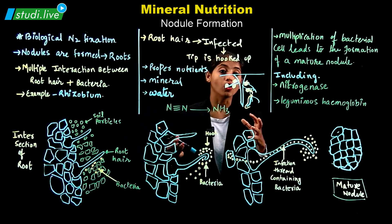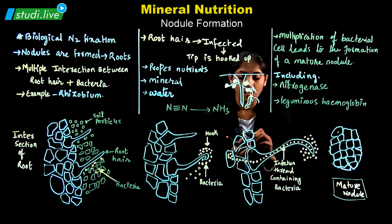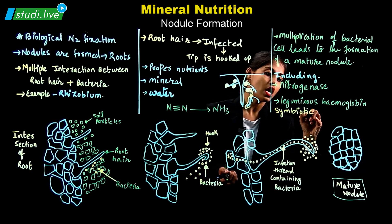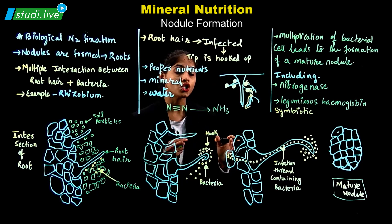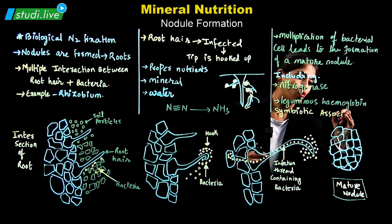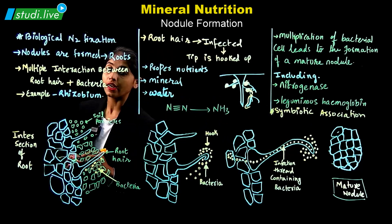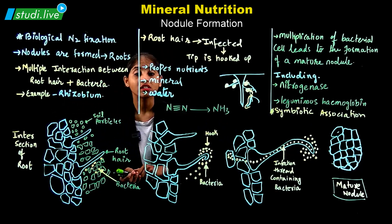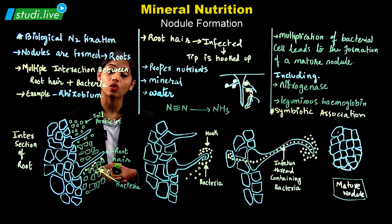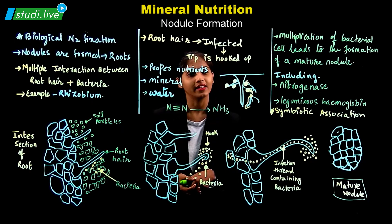That's how the nodule formation takes place. This is also called a symbiotic association, because both species are being benefited and sharing the benefits. This is a really important concept where you need to understand the different stages of nodule formation. I hope you've got the clarity. Stay tuned with Study Life. Thank you.